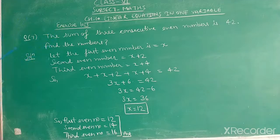Question number 7 is, the sum of 3 consecutive even numbers is 42. Find the numbers.